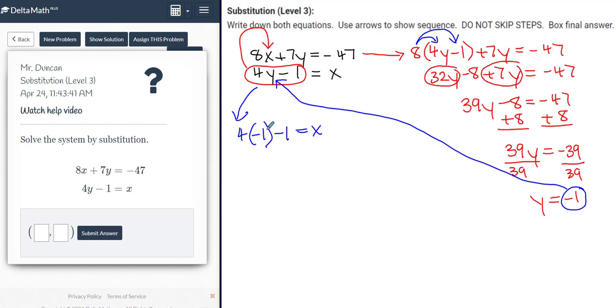That's really 4 times negative 1 minus 4, but we have to multiply first. So 4 times negative 1 is negative 4. Bring down the negative 1, bring down the equal, bring down the x, and then negative 4 minus 1 is negative 5, is equal to x.